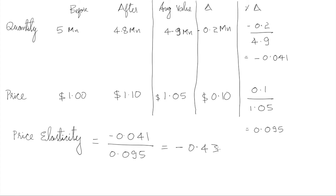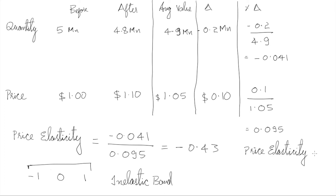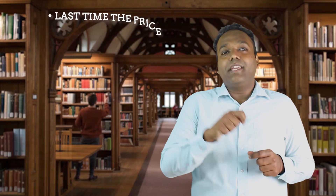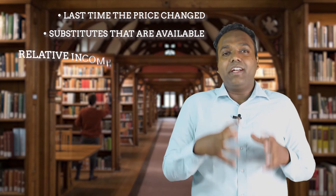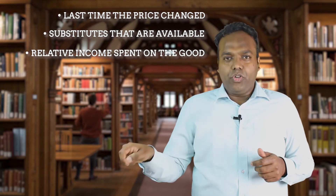Price elasticity has a range of values. If it varies between minus one and plus one, that means it is inelastic. Price elasticity of demand depends on three factors: how long ago the price last changed, the substitutes that are available, and the relative income you spend on the good.